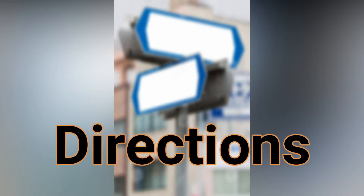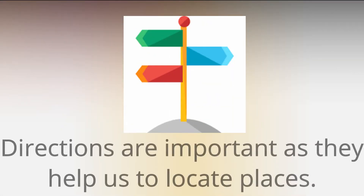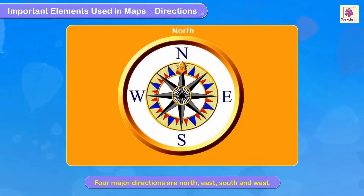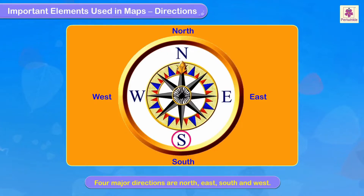The next topic is how to read a map. For that, first of all you need to learn about directions. Directions are important as they help us to locate places. You all are aware about the four main directions. The four main directions are north, east, south and west. They are commonly denoted by the initials N, E, S and W.